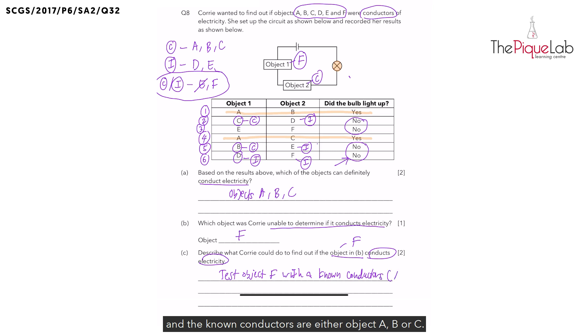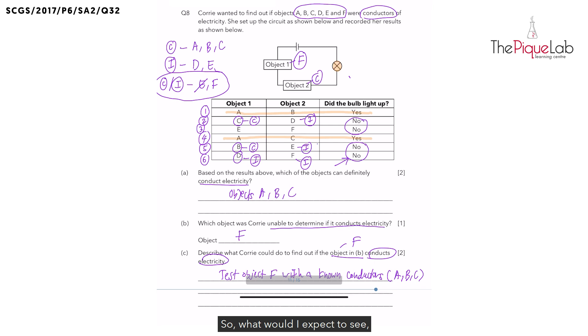And the known conductors are either object A, B, or C. So what would I expect to see if object F is a conductor of electricity? Yes, the bulb should light up because electricity can flow through the circuit, flowing through both objects and the light bulb, causing it to light up. So our observation should be if the bulb lights up.